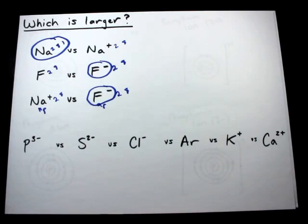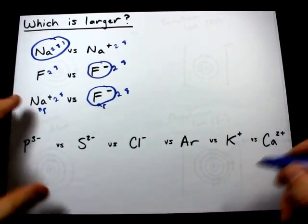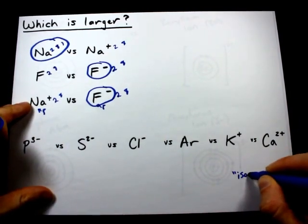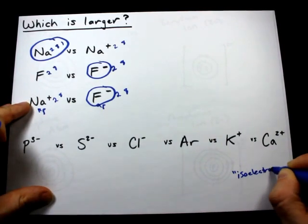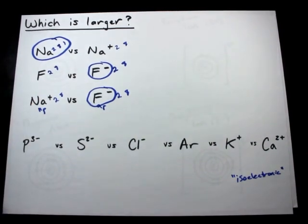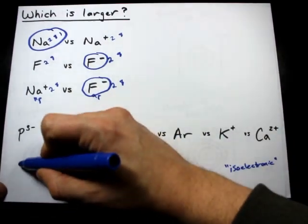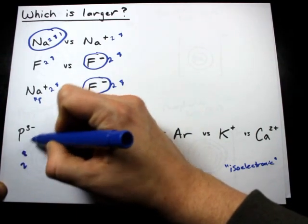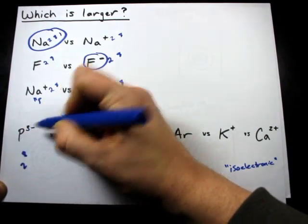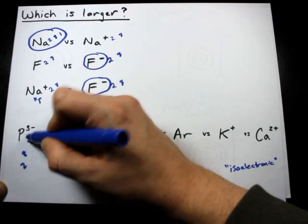And finally, I've included all of these versus each other. Which is the largest of all these? These are isoelectronic because they all have the same electron configuration. Phosphorus is 2, 8, 5 normally, but because we have a minus 3 charge, it is 2, 8, 8, a complete third shell.